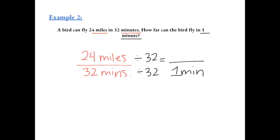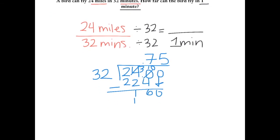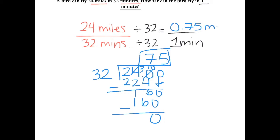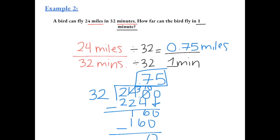We divide 24 by 32, adding a decimal and a zero. 32 goes into 240 seven times, which equals 224. We subtract to get 16, carry down a zero. 32 goes into 160 five times, which equals 160. So we get 0.75 — the bird can fly 0.75 miles in 1 minute.